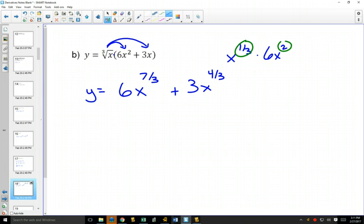So we chose numbers that would make us think about our rules. And now we can take our derivative because it's in the right form. We can bring the 7/3 out in front. 7/3 times 6 is?